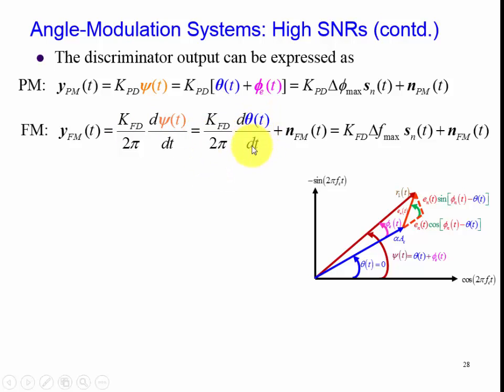So here we have d theta dt. When we take the derivative of this expression here, we have d phi dt and then we get the noise term, and we'll describe that later. K_FD multiplied by delta f max multiplied by the normalized signal plus our noise term for the FM case.